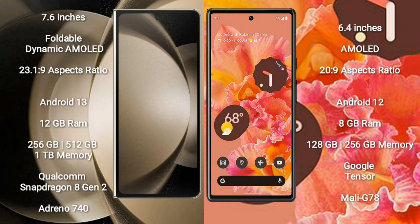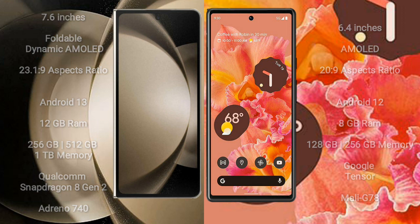Samsung Galaxy Z Fold 5 comes with 12GB RAM and 256GB, 512GB, or 1TB internal storage, with a Qualcomm Snapdragon 8 Gen 2 processor and GPU Adreno 740. Google Pixel 6 comes with 8GB RAM and 128GB or 256GB internal storage, with a Google Tensor processor and GPU Mali-G78.